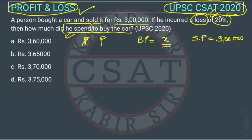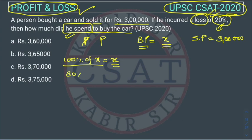He incurred a loss of 20%, and this loss will be on the buying price. If you remember, 100% of x is x. For profit and loss calculations, we write x as 100% of x. Since there is a loss of 20%, it becomes 80% of x — we subtract 20 from 100.